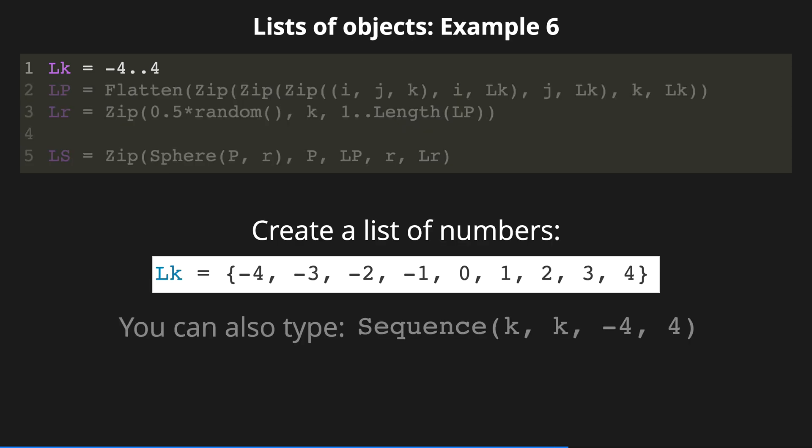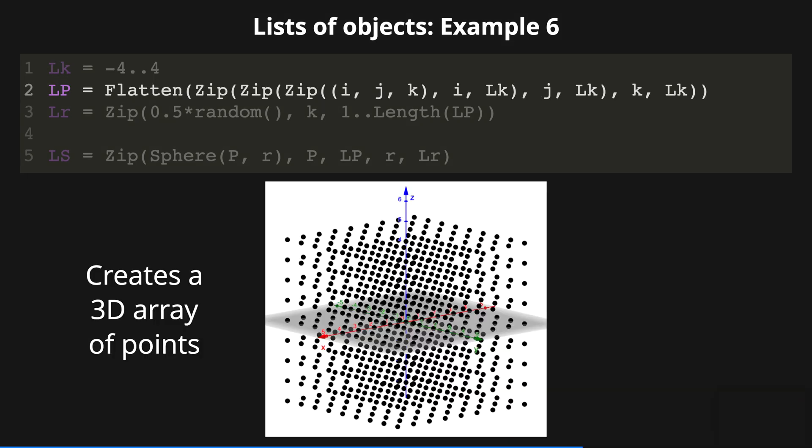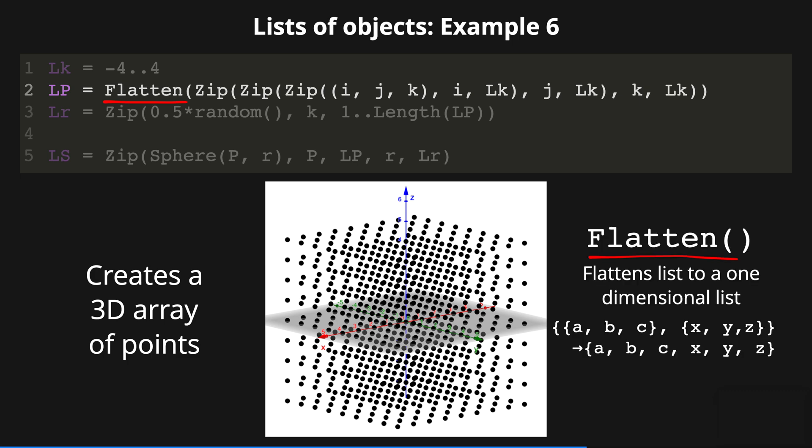First, we create a list of numbers from minus 4 to 4. This is a shorter way to create a sequence with increment of 1 similar to using the sequence command. Then, we combine the zip command three times to create a three-dimensional array of points using also the flatten command. As its name suggests, it flattens the list to a one-dimensional array or one single list.